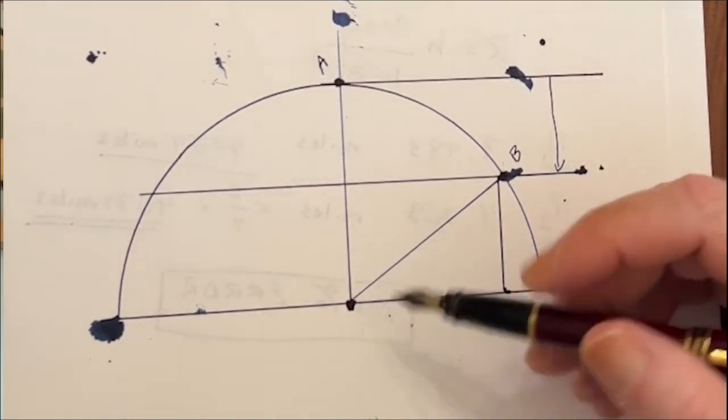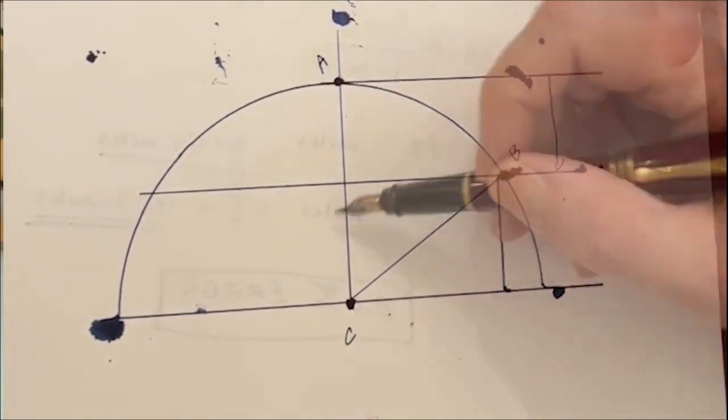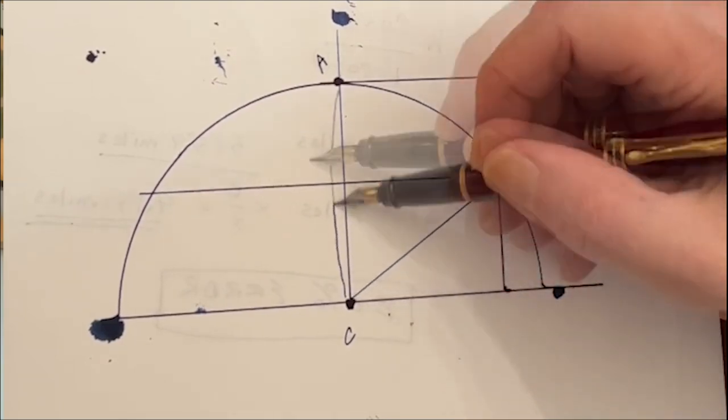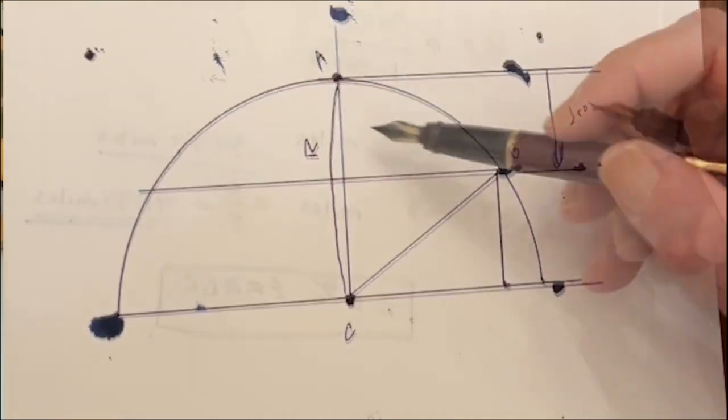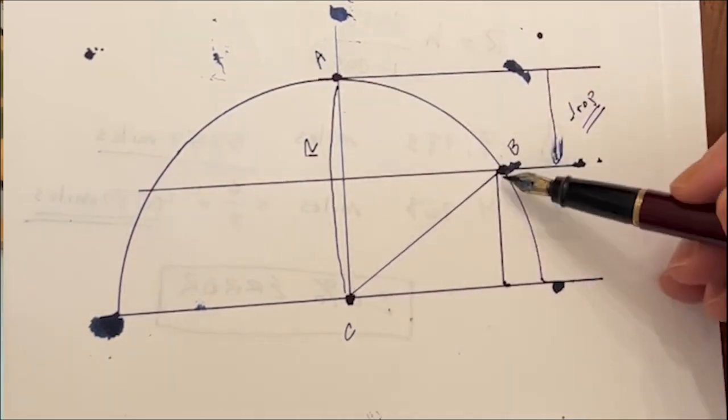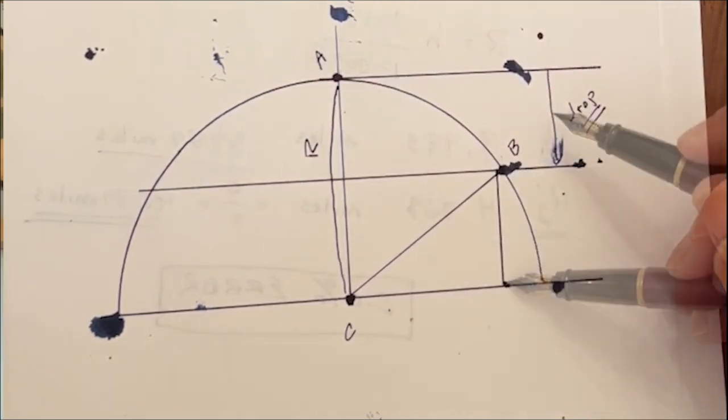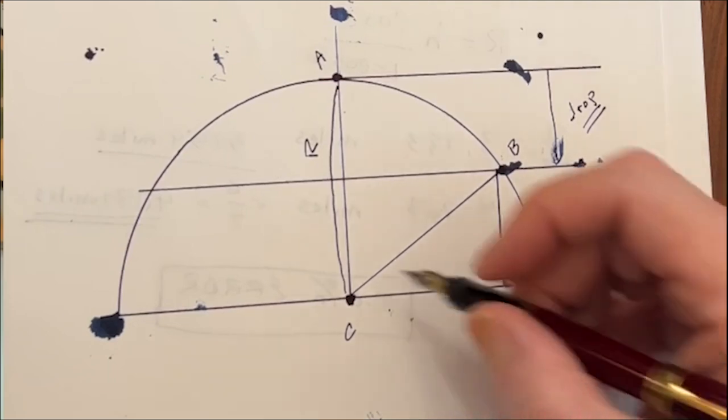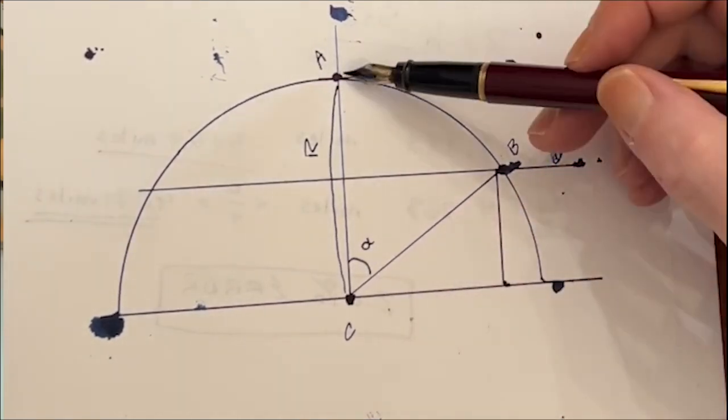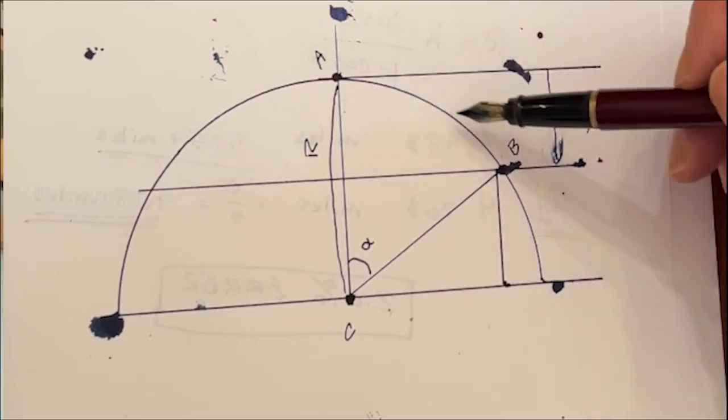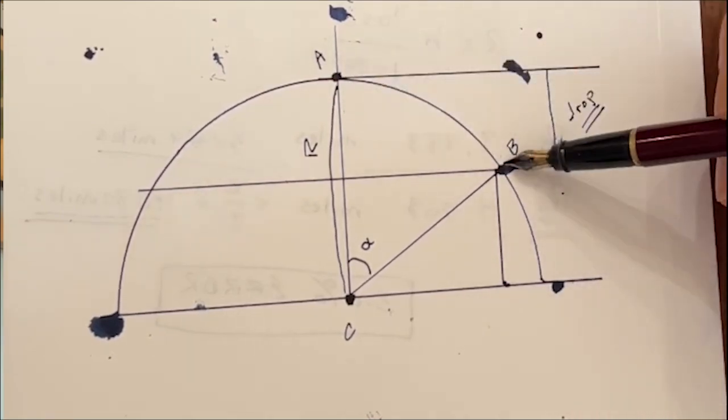So first of all, if this is the center of the sphere, we'll call that C. This length right here would be the radius of the sphere. Now this is the drop, it's equal to the radius minus this segment right here. We've got a couple of different angles here. First of all, let's have a look at this one. We'll call this angle alpha. And this is the distance along the surface of the sphere between A and B. Well how far is that? How many degrees would it be?